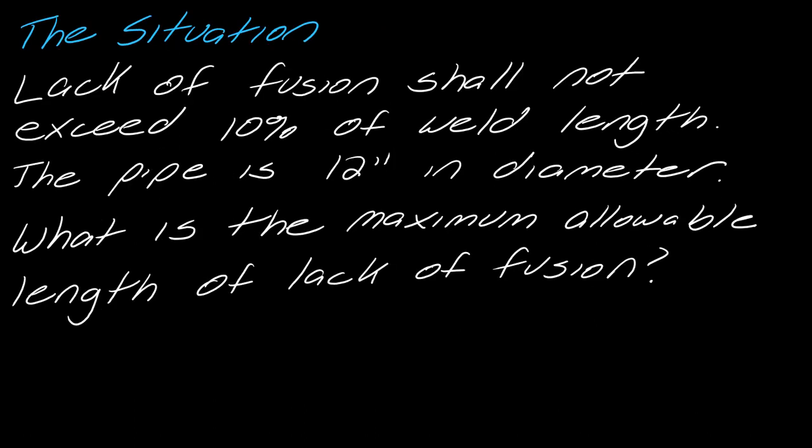Let's talk about the new percentage situation. Here's an example: lack of fusion shall not exceed 10% of the weld length, and the pipe is 12 inches in diameter. What is the maximum allowable length of lack of fusion?